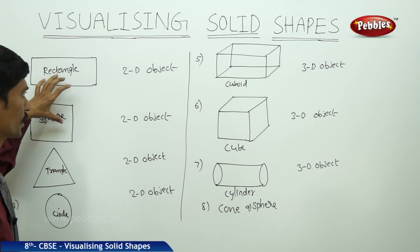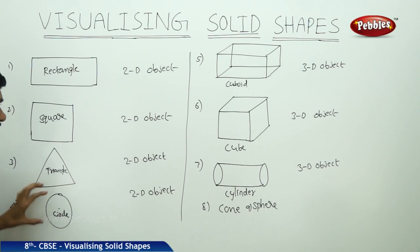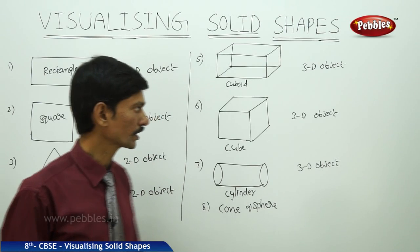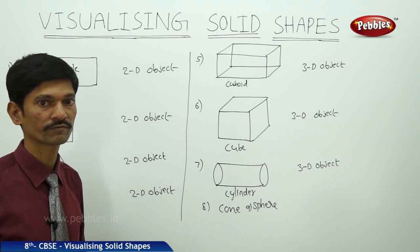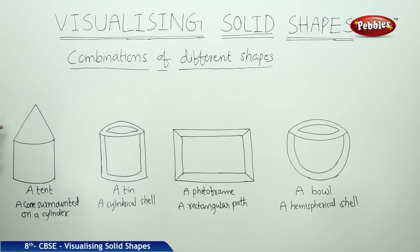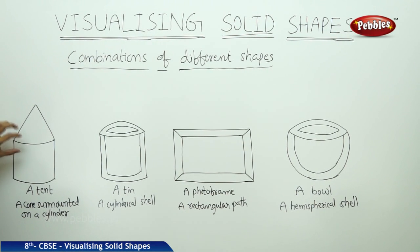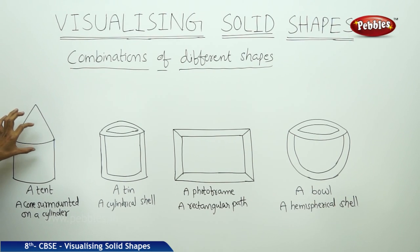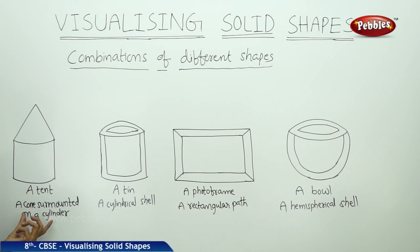In all these figures the shapes are single — only a rectangle, only a square, only a triangle, only a circle. But in our day-to-day life we come across figures that are combinations of two different shapes. For example, the first figure is a tent. We can observe a cylindrical shape with a conical shape on top — this is a cone surmounted on a cylinder.